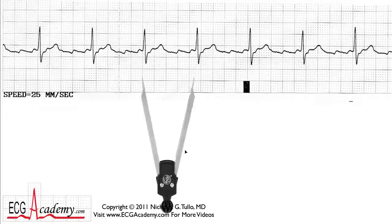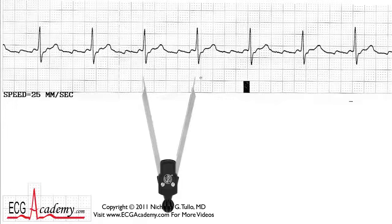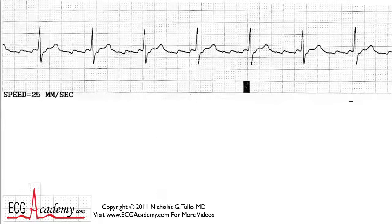What's the rate? If we count heavy boxes: 300, 150, 175, 60 — it's between 60 and 75 beats per minute, so we'll call it 68. So we have a regular rhythm at 68 beats per minute.